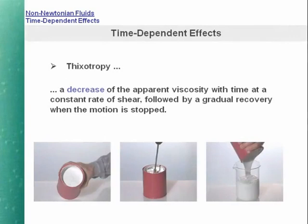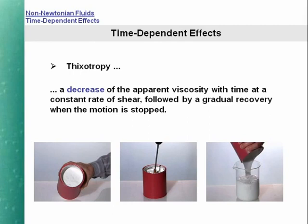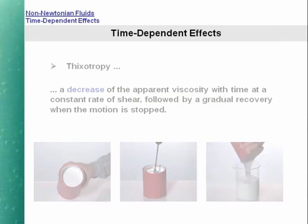In addition to the change in material properties which can be brought about by changes in the time scale of a deformation process, and by the strength of that process, there are also changes which can be brought about in some materials by simply waiting long enough. The stirring of some materials at a constant rate can result in a substantial lowering of the viscosity with time, with a gradual return to the initial viscosity when the stirring is stopped. This is called thixotropy.